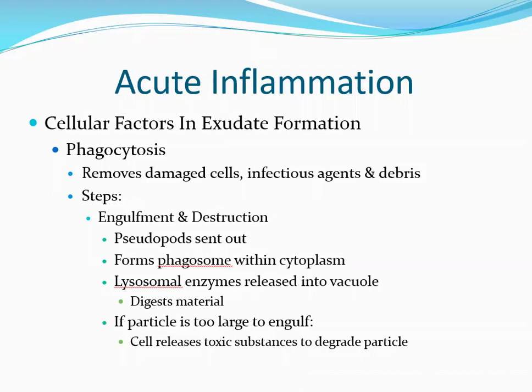If the particle is too large to engulf, the leukocyte undergoes frustrated phagocytosis — it cannot engulf normally, so it releases toxic or degradative substances into the surrounding tissues to try and break down the particle. For example, when you have a sliver causing inflammation, phagocytic cells respond but the sliver is much too large to engulf, so they get frustrated and try to release other substances to destroy the material.